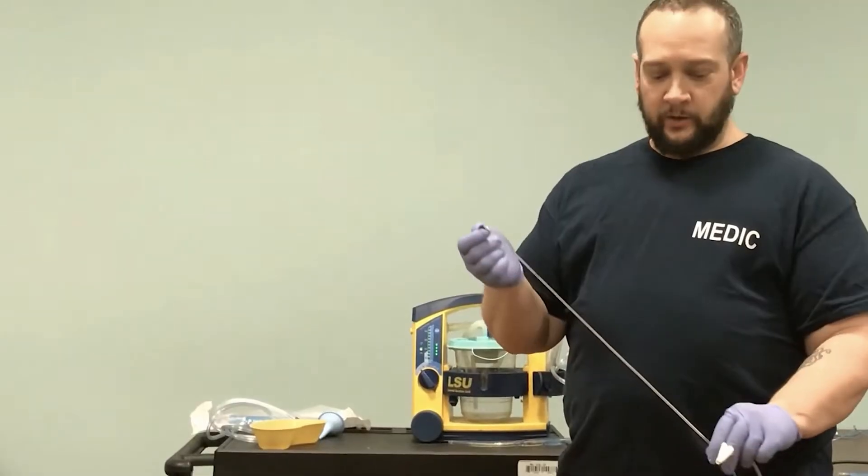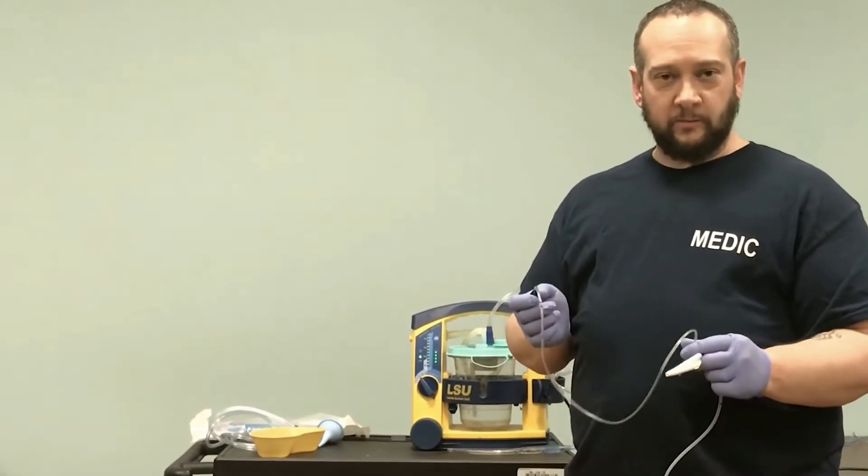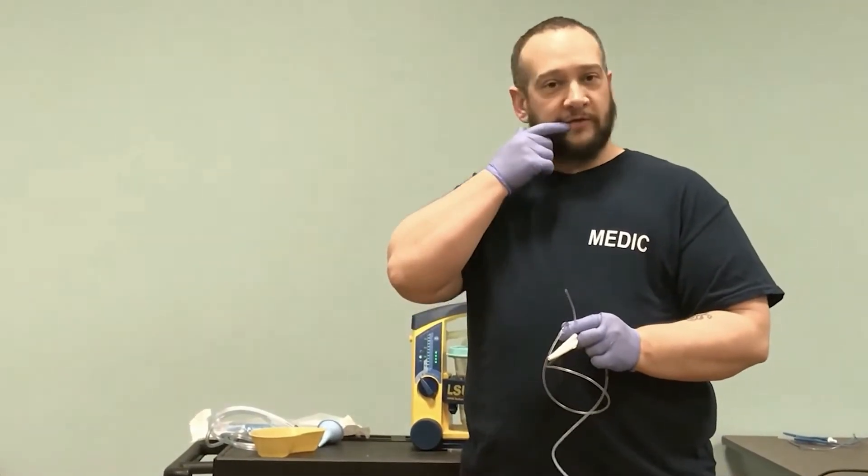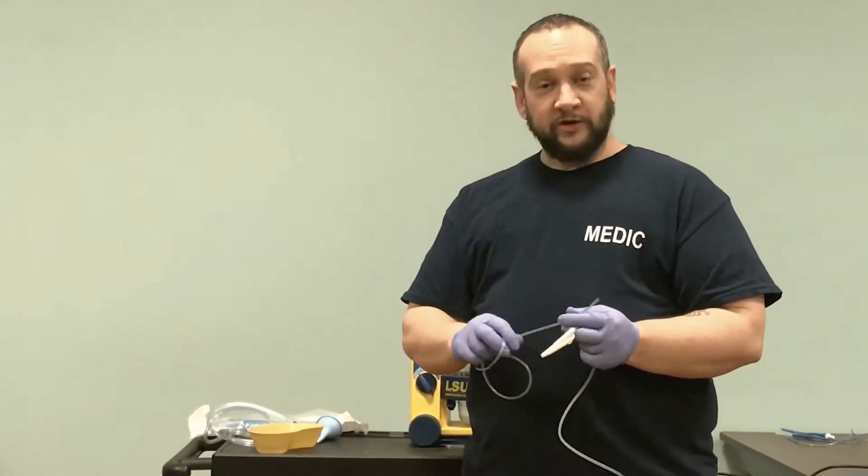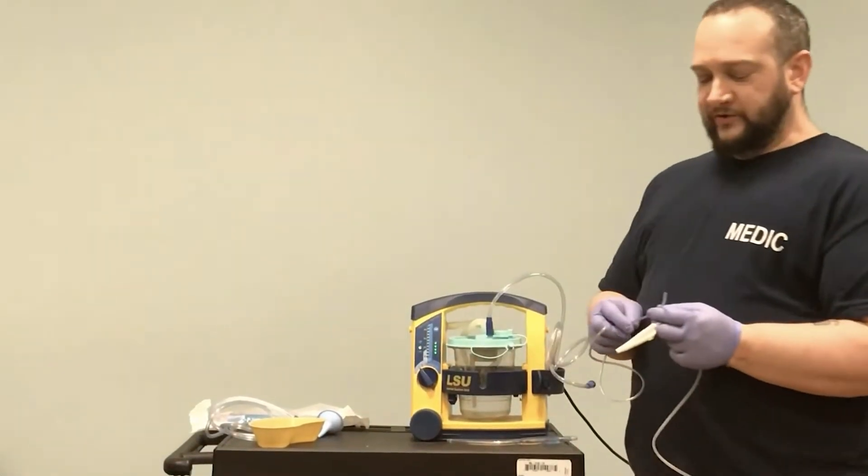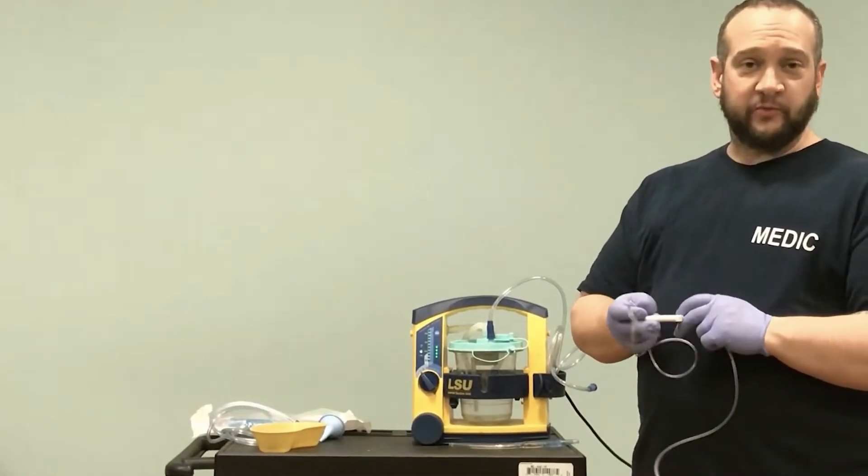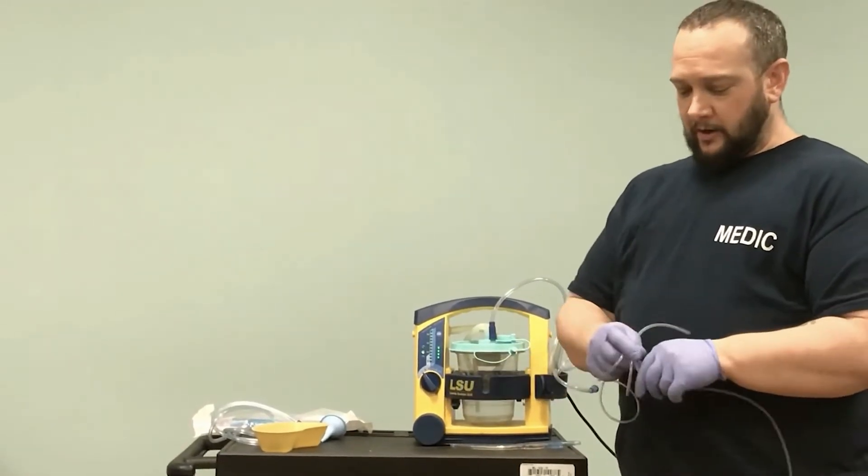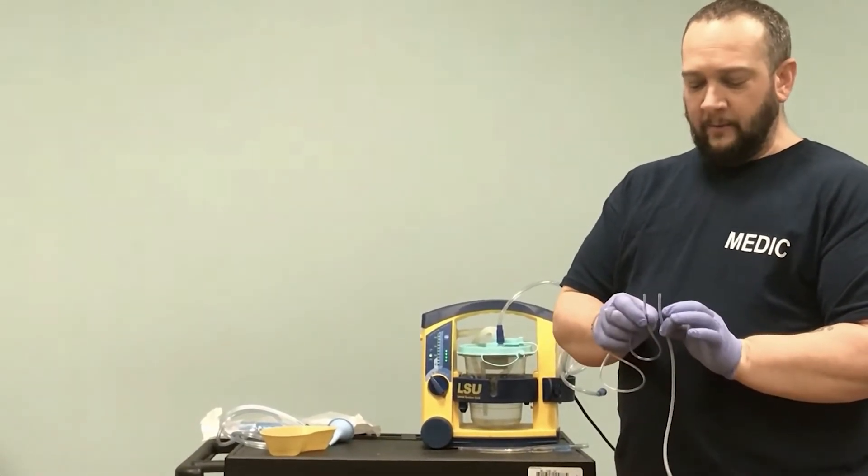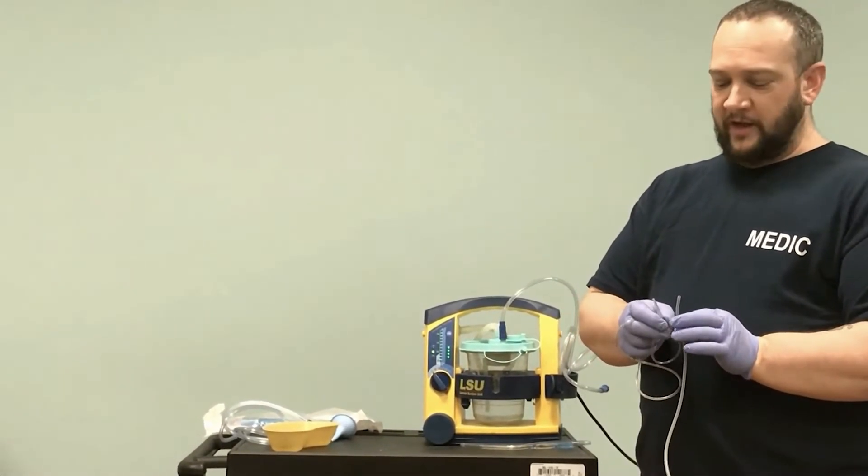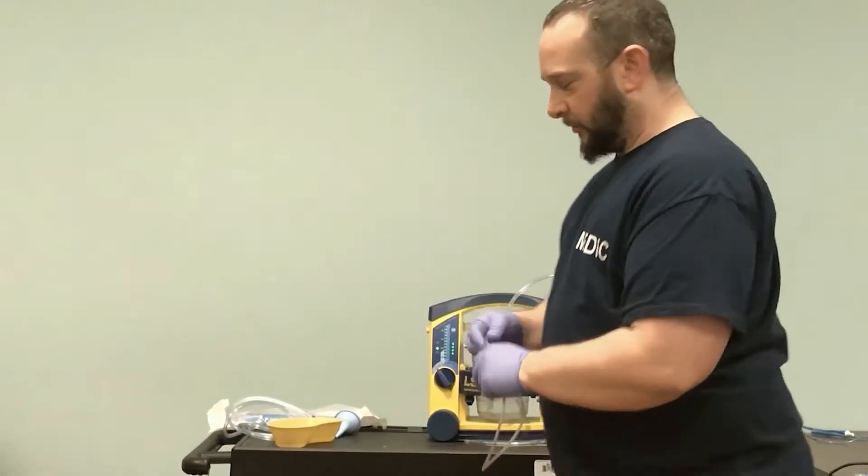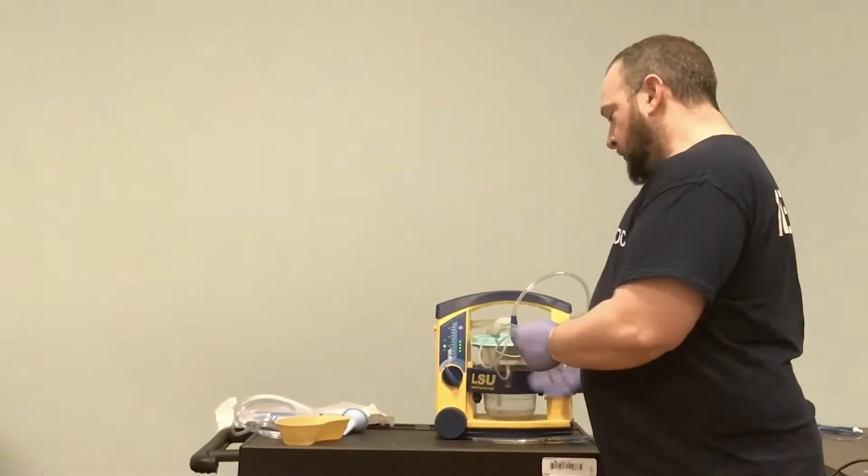Just like the Yankauer, this attaches to our tubing device, and this is the thumb port. We'll have a predetermined length, measuring from the corner of the mouth to the corner of the ear, the same as OPAs. When we look at the internal diameter, if we have thick secretions or food particles, this won't be conducive to getting that out.